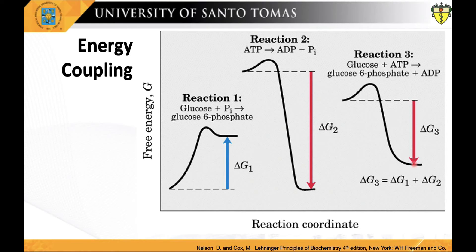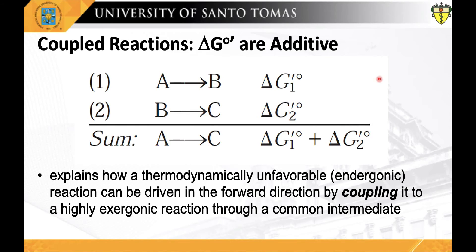Because delta G3 is negative, the overall reaction is exergonic and will thus proceed spontaneously. The standard free energy changes of coupled reactions are additive. Free energy changes for chemical reactions can be added and subtracted to give free energy changes for other chemical reactions. Reactions in which chemical bonds are formed between two organic molecules are usually catalyzed by enzymes that transfer energy from cleavage of ATP in a phosphoryl transfer reaction, or by enzymes that cleave a high-energy bond in an activated intermediate. This principle explains how a thermodynamically unfavorable endergonic reaction can be driven in the forward direction by coupling it to a highly exergonic reaction through a common intermediate.